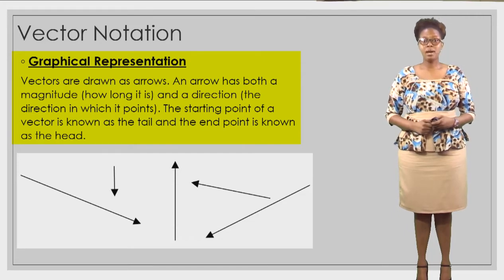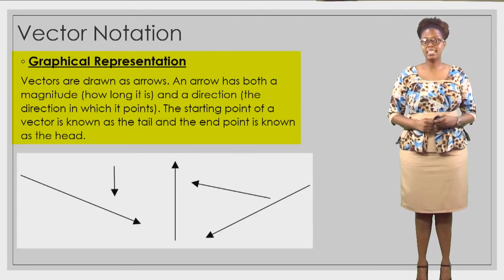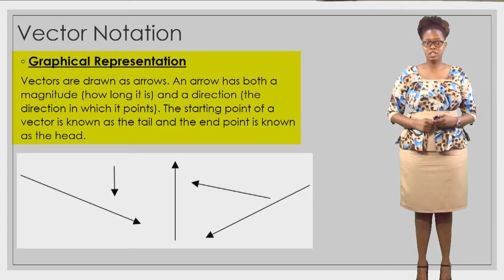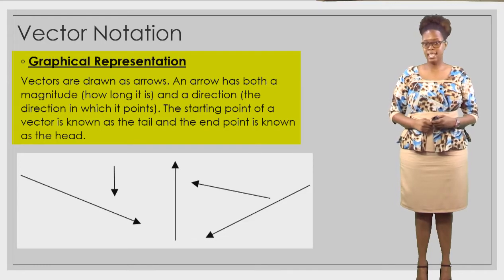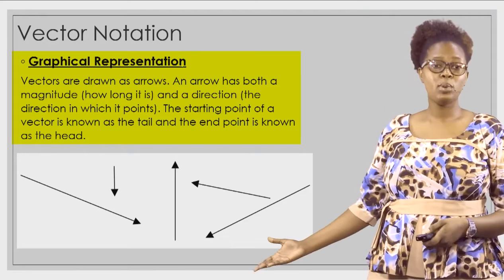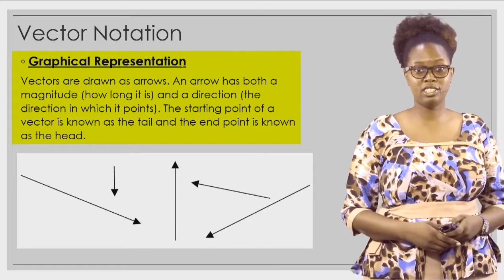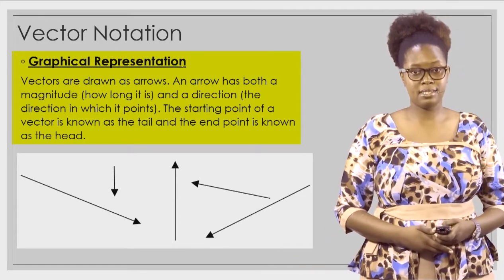For graphical representation, vectors are drawn as arrows. An arrow has both a magnitude — that is how long it is — and a direction — that is the direction which it points in. The starting point of a vector is known as its tail and the end point is known as its head. We have some examples here of arrows going in all directions — these are all examples of vectors.